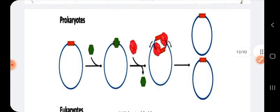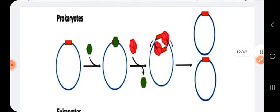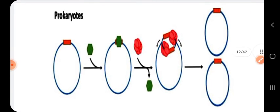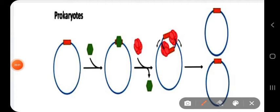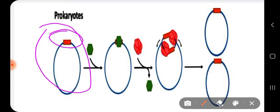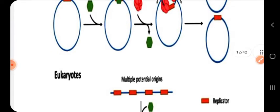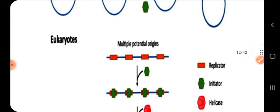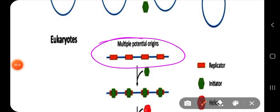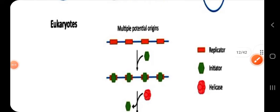As shown in the diagram, prokaryotes have only one origin of replication, and most prokaryotic DNAs are circular. Topoisomerases play an important role here, whereas eukaryotes have multiple origins of replication — since eukaryotic DNA is very large, multiple origins are needed to quickly catalyze synthesis of new DNA strands during the S phase of the cell cycle.